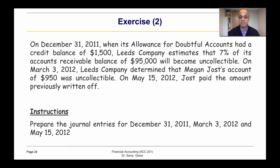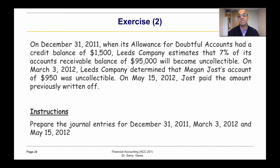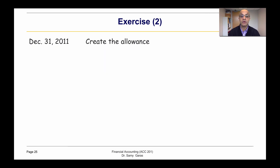Let us look at another example. On December 31st, the allowance had a credit balance of 1,500, which means we need to subtract it. The company estimates seven percent of its accounts receivable of 95,000 will be uncollectable. On March 3rd, the company determined that an account of 950 will be uncollectable, and on May 15th the customer turned out to pay.